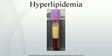Unclassified familial forms are extremely rare, including hyperalpha-lipoproteinemia and polygenic hypercholesterolemia.